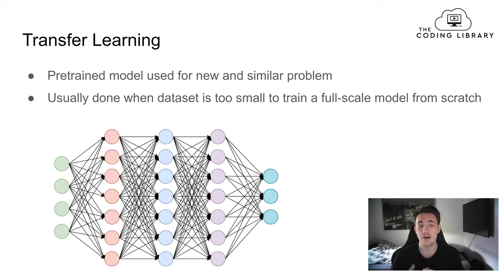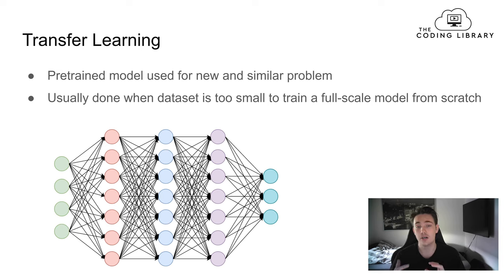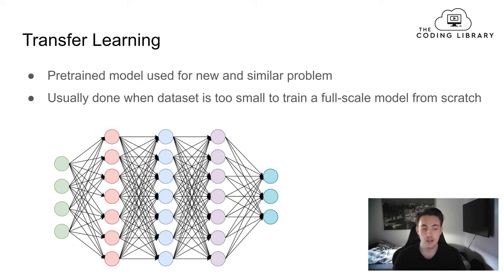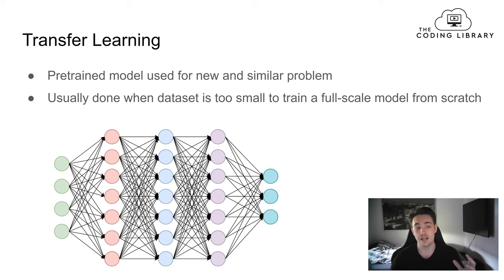So let's jump into the first slide where we're going to talk about what transfer learning is and how we can use it in neural networks. Transfer learning is when we have a pre-trained model and we want to use it for a new and similar problem. The pre-trained model may have been trained on a really large dataset with even thousands of different classes. Transfer learning is usually done when the dataset is too small to train a full-scale model from scratch.